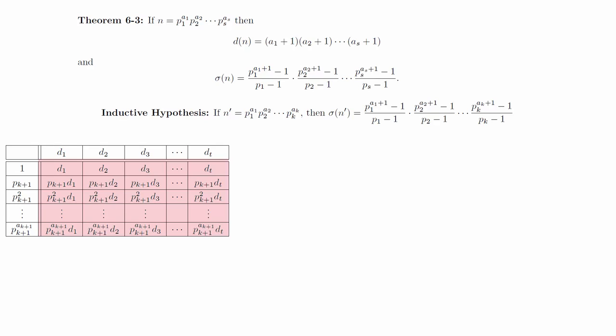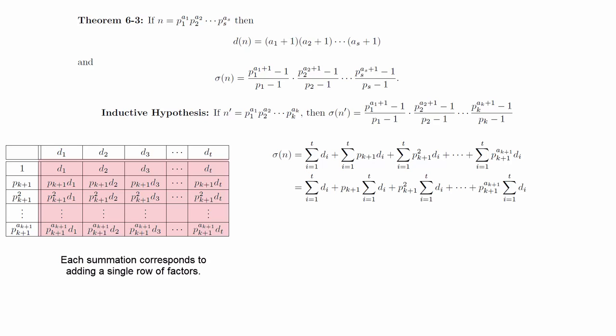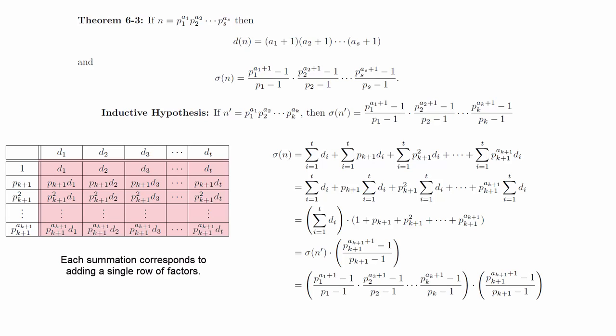Similarly, we can add up all the values in the chart to compute sigma of n. Although this initially looks messy, notice that by factoring out the individual powers of p sub k plus 1, we get a consistent sum that could also be factored out. Notice that this sum is the sum of all the factors of n prime, so it can be represented as sigma of n prime. Then we can apply the inductive hypothesis and see that the result follows upon making the substitution.